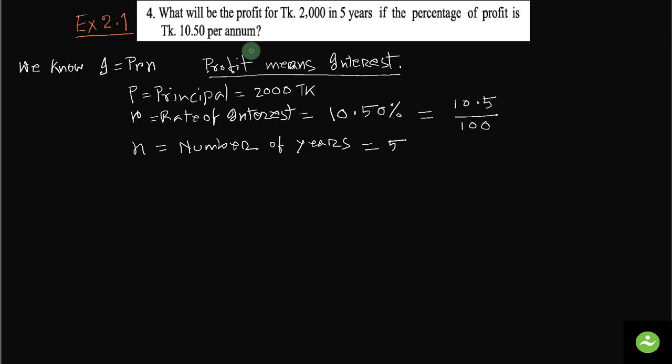We have to find out the profit. Profit means interest, and interest means profit. If we use the formula interest equals to PRN, we can find out the interest or profit.